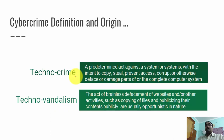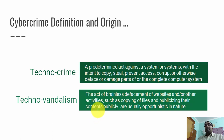So here you have the two types: techno crime and techno vandalism. The gist is very simple. Techno crime is targeted at a particular individual or a particular organization — you already have someone in mind that you want to target and you perform the attack. But with techno vandalism, we don't have any target in mind. We just perform attacks randomly and we don't care about who is going to be affected — kind of sadism.